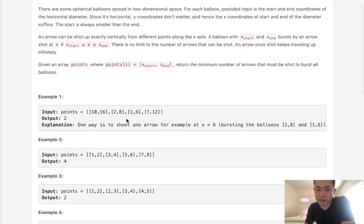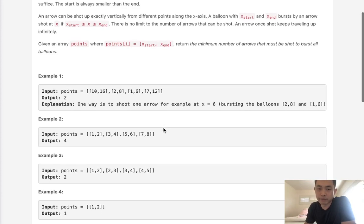So we can see with this example here, it's going to be two arrows, since one arrow is going to burst the [2,8] and [1,6], while the other arrow will burst the [10,16] and [7,12]. So essentially, we're trying to find some overlap here.